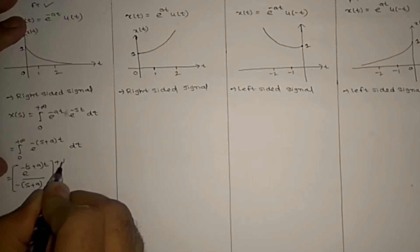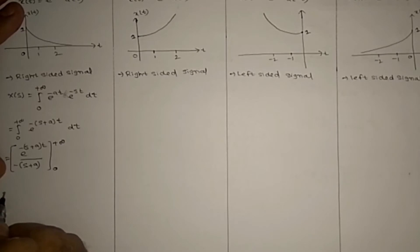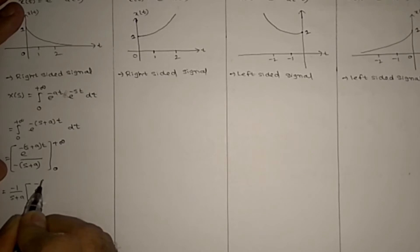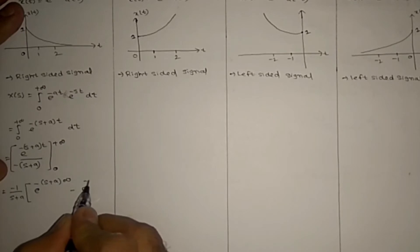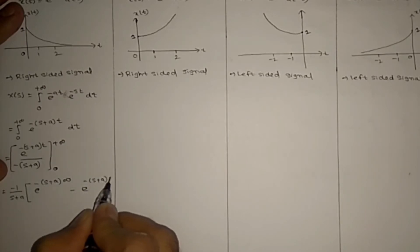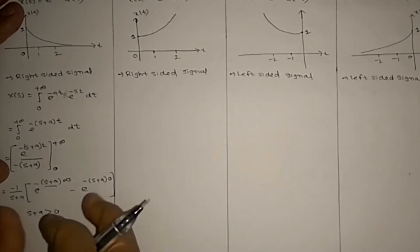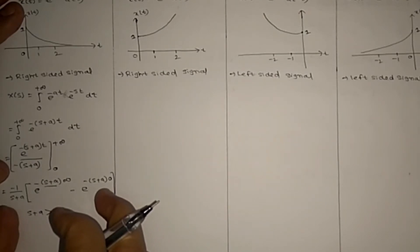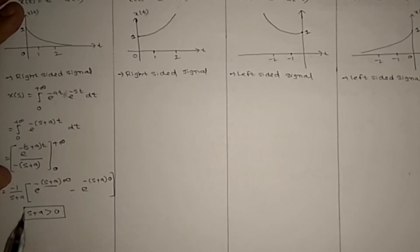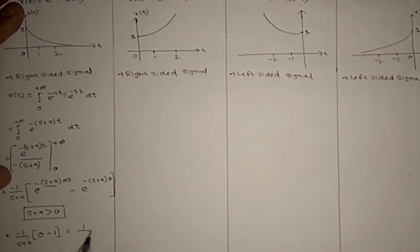The integration gives e^(-(s+a)t) divided by (s+a), with a negative sign, evaluated from 0 to plus infinity. This gives minus 1/(s+a) times [e^(-(s+a)·∞) minus e^(-(s+a)·0)]. So this equals minus 1/(s+a) times [0 minus 1], giving 1/(s+a).